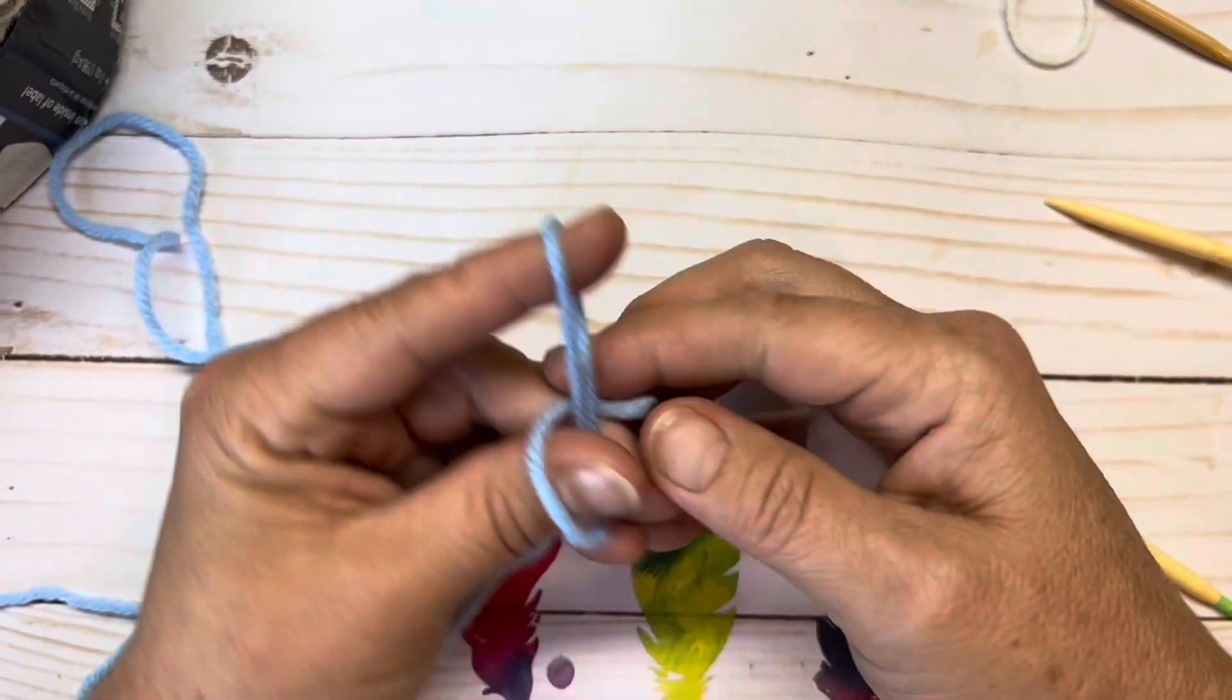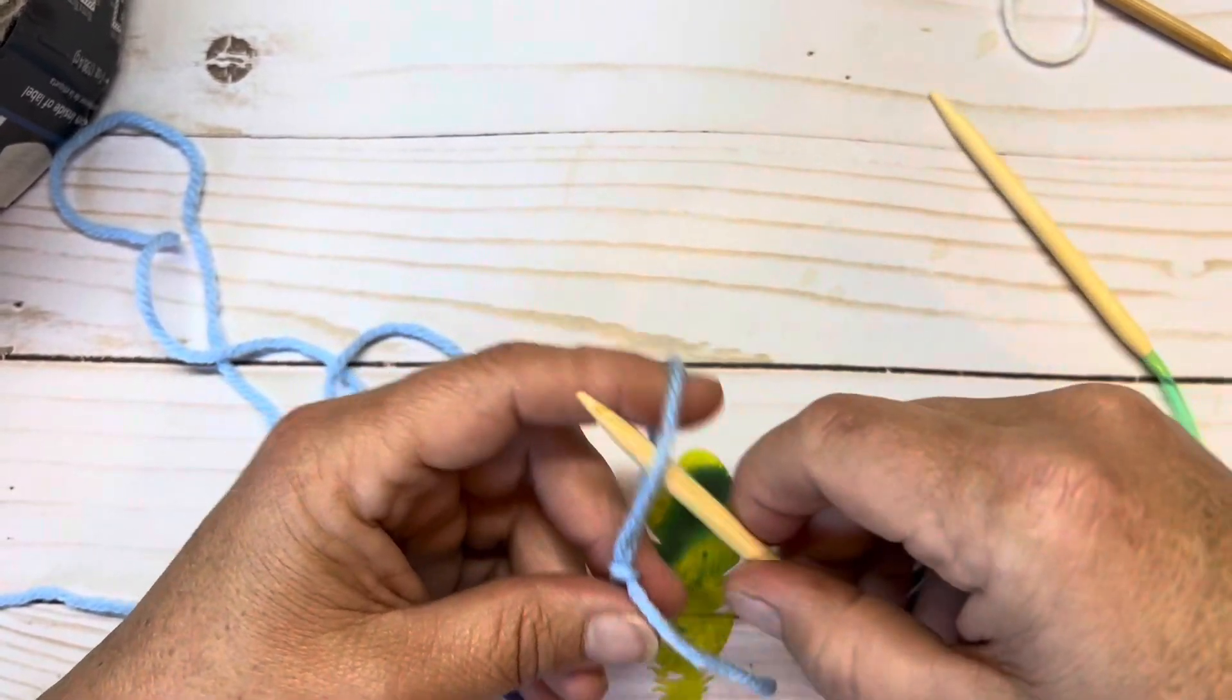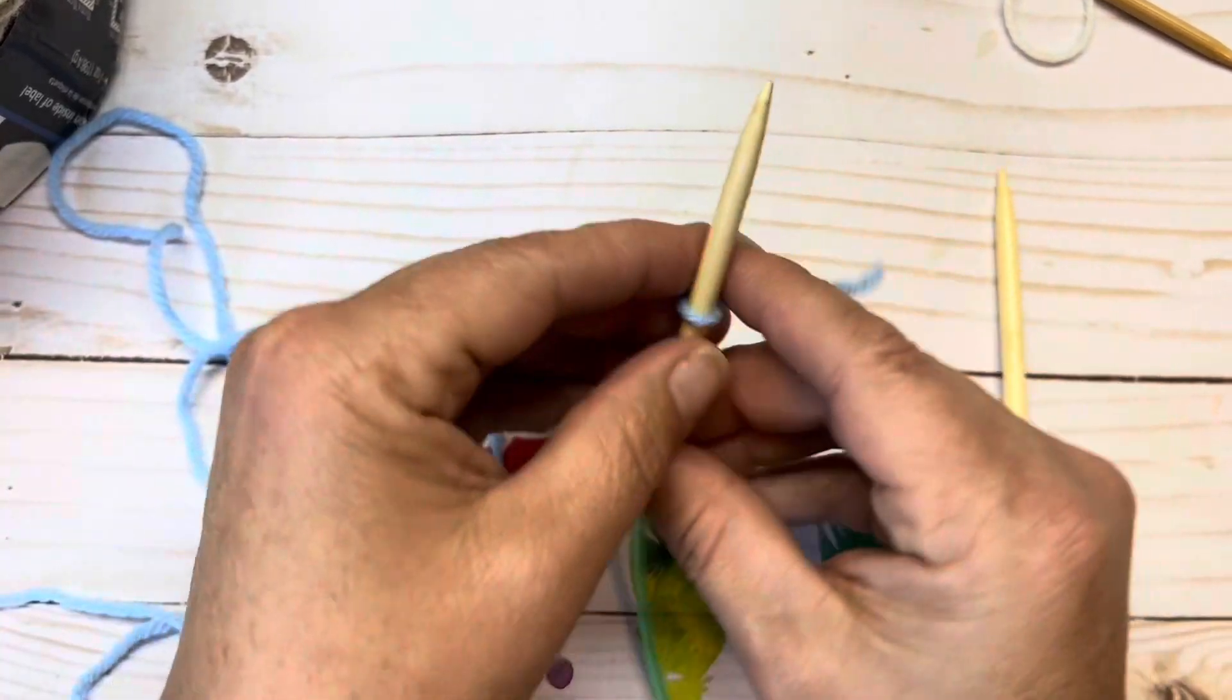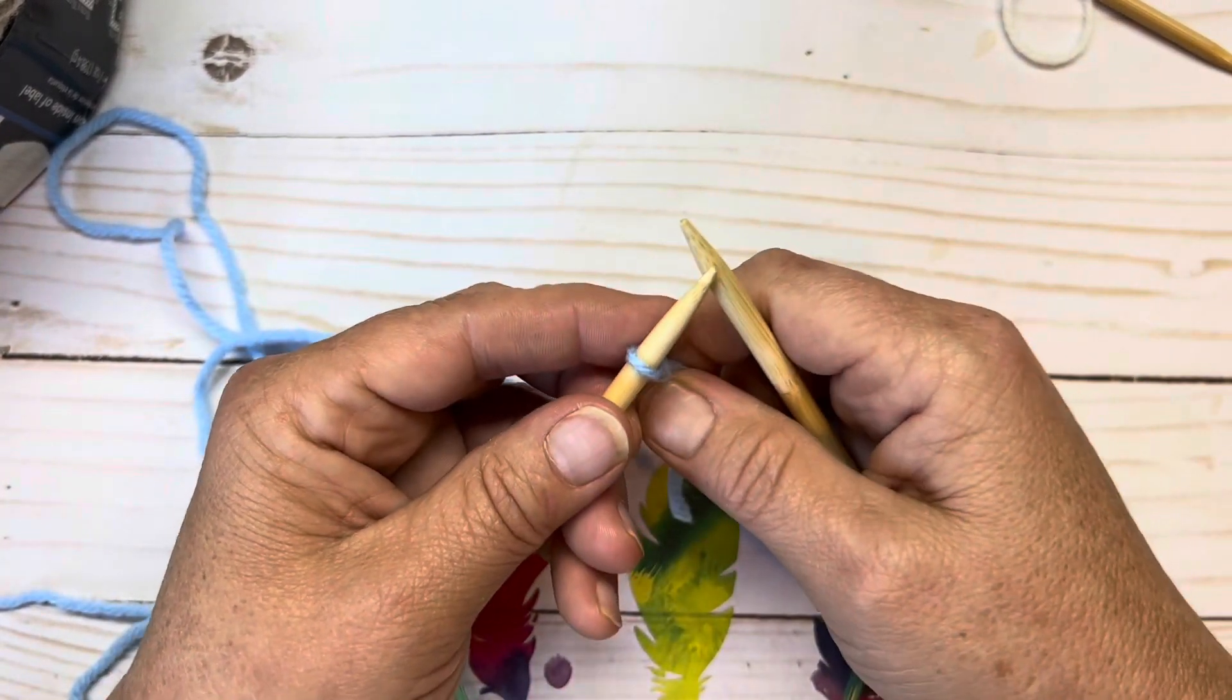Now because I'm only casting on nine stitches I'm going to do this a short version way instead of a long tail cast on. So I'll go ahead and show you how I'm going to do that.